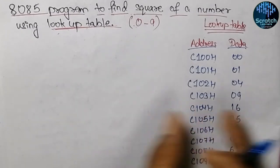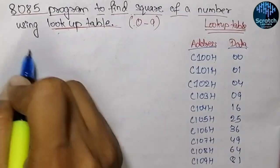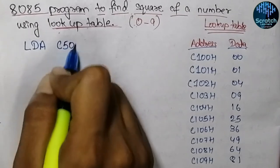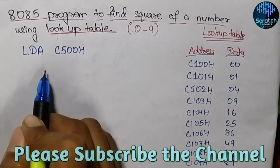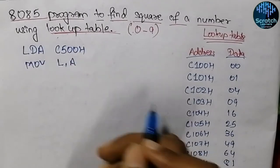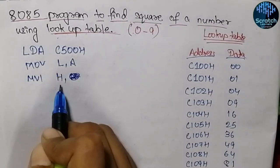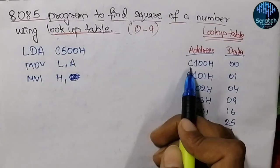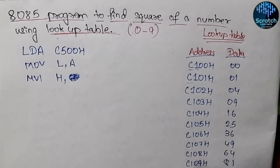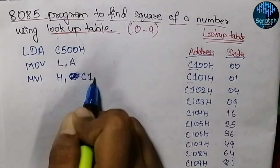In the beginning, we take the input for which integer we want the squared value. I am inputting the data directly into the accumulator. After inputting the data, I move it into register L. We need to initialize the H register with the most significant bits of the lookup table address. The most significant byte is C1, so H will be initialized with C1H.